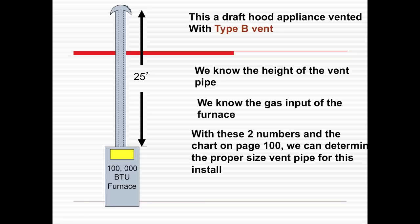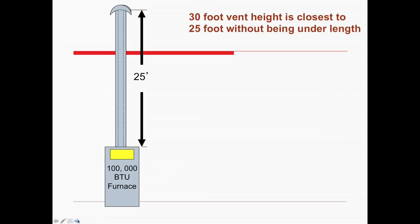We know the gas input to the appliance. We can go to the chart on page 100 and determine the proper vent size. This is done with the 2012 IFGC International Fuel Gas Code — later editions will probably have a different page number. A 30-foot vent height is the closest to 25 feet without being under length, so it has to be at least that long or the next one up.